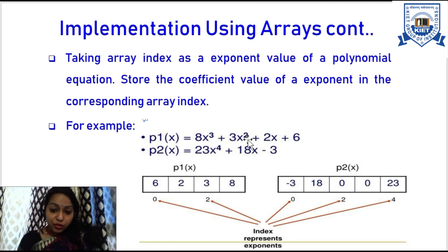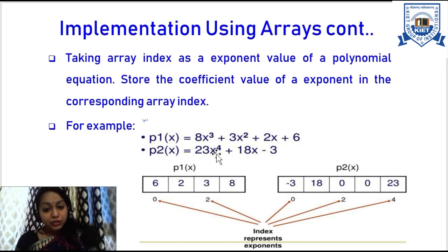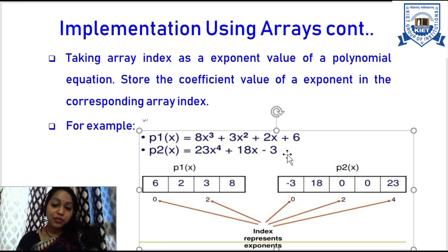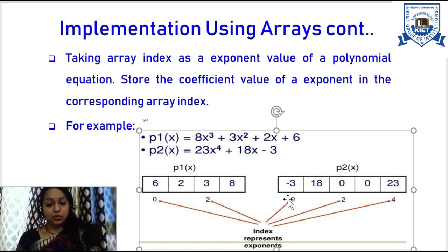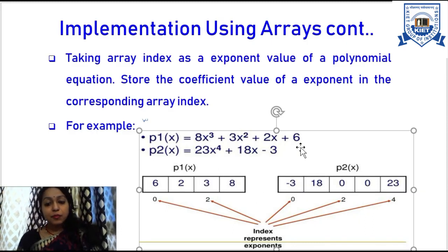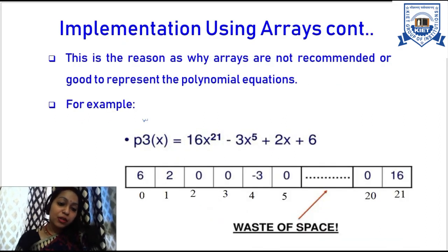The array of size 5 has index locations from 0 to 4. Coefficient 23 of 23x power 4 is stored at index 4. Coefficient 18 of 18x (which is x power 1) is stored at index 1. Minus 3 (which is minus 3x power 0) is stored at index 0. The terms not present in the polynomial, such as x power 3 and x power 2, are written as 0x power 3 and 0x power 2 — those index locations store the value 0.